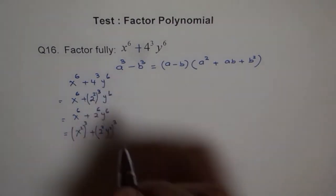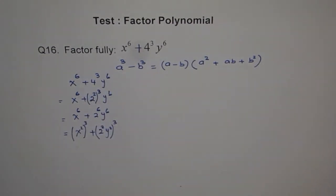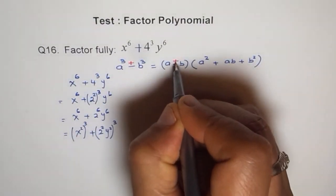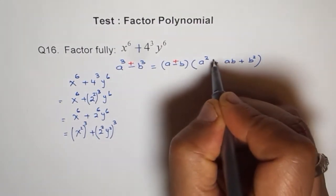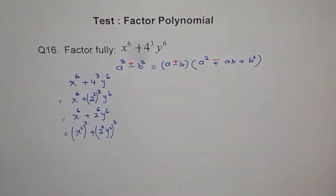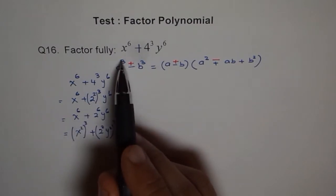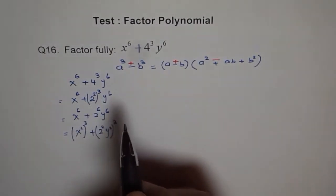For the plus case, let me also write the sum of cubes formula. If we have a cube plus b cube, then the formula is: a plus b times a square minus ab plus b square — so plus here and minus there. Now we have a cube plus b cube, so we will use this formula.